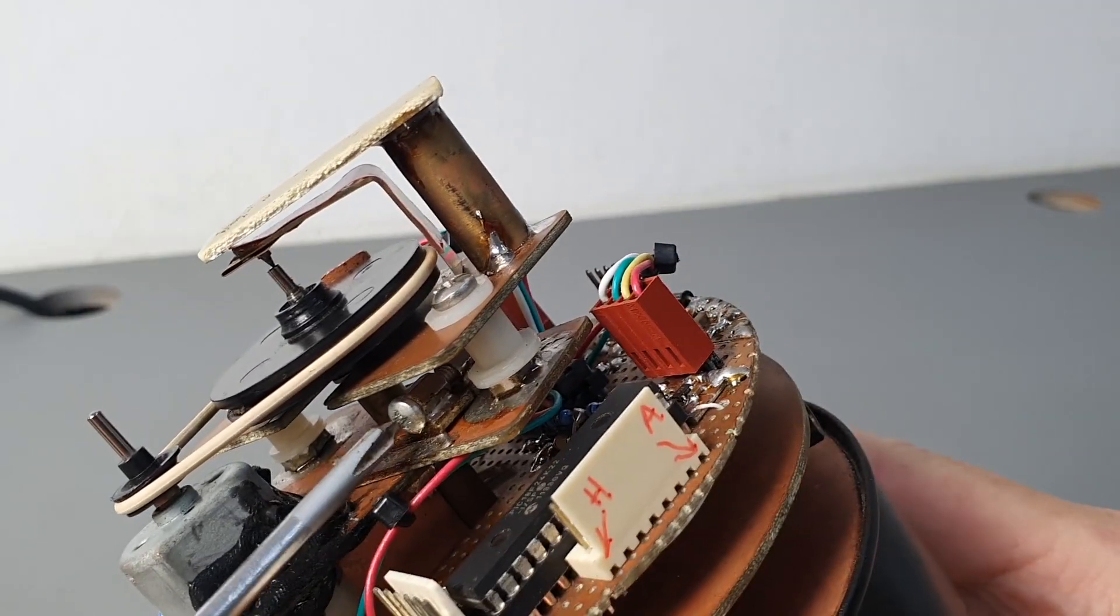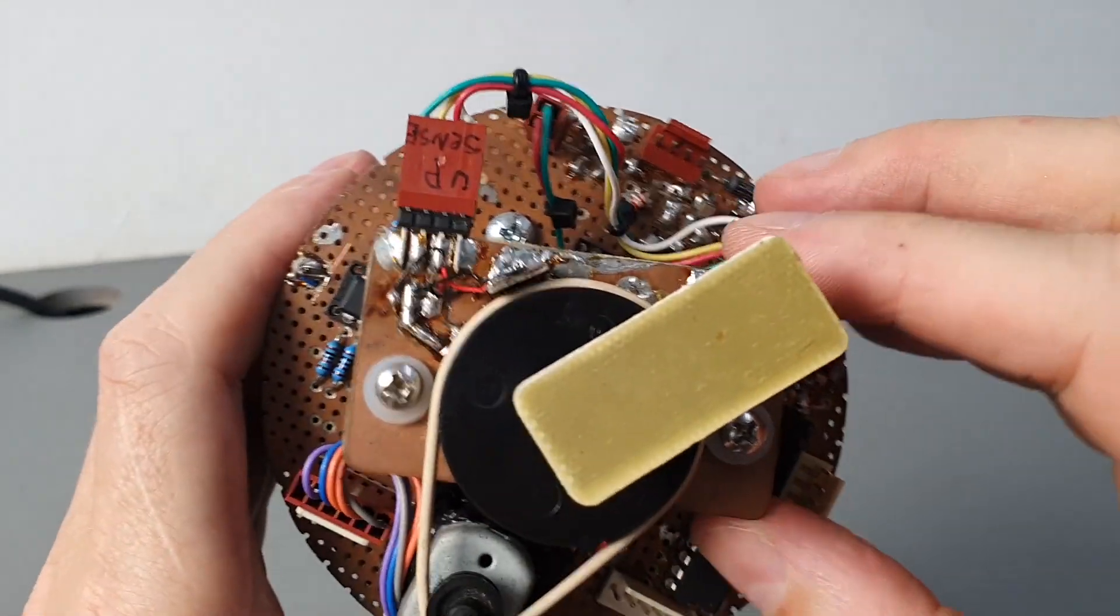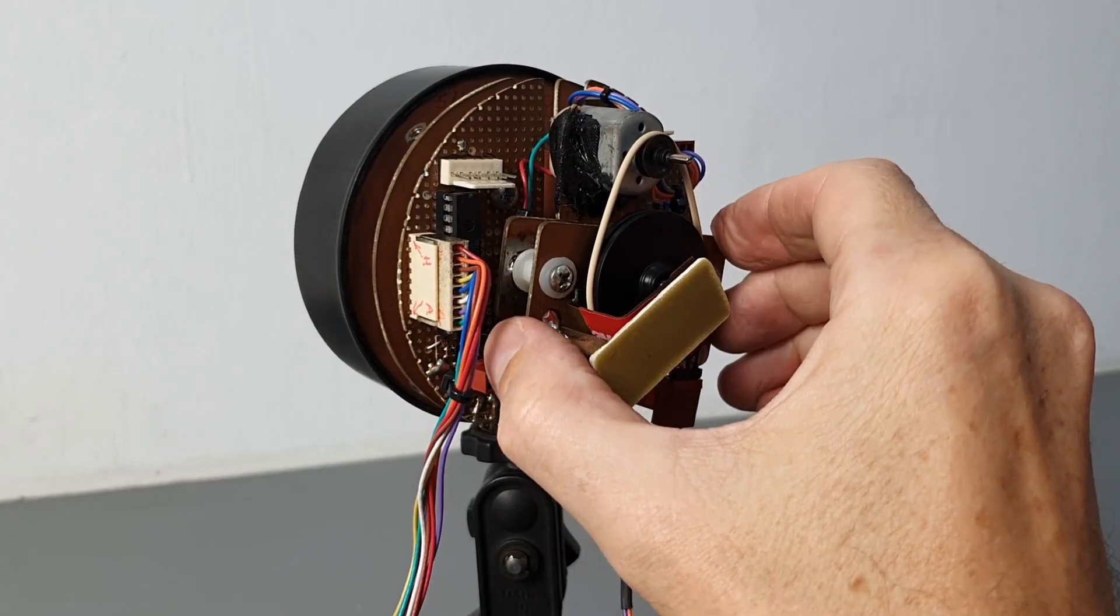The Hall sensor is on an adjustable rotating sleeve so the relative phase of the synchronization pulse and the output waveform can be adjusted.